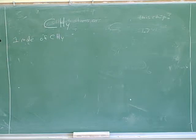Let's start rounding things off more to integers. The periodic table gives us a mass of 12 for carbon, so we can just give carbon a mass of 12.